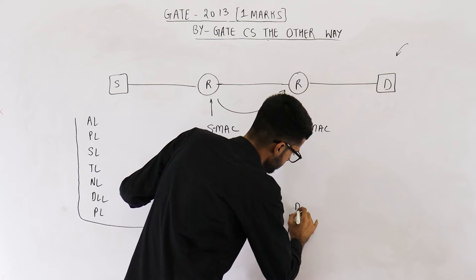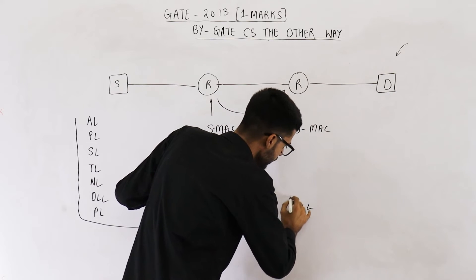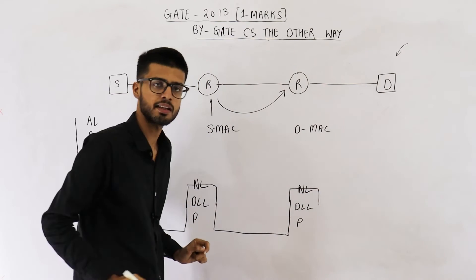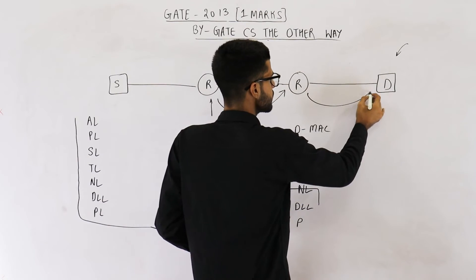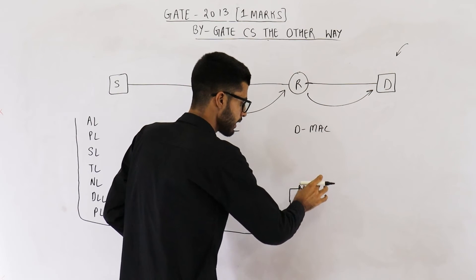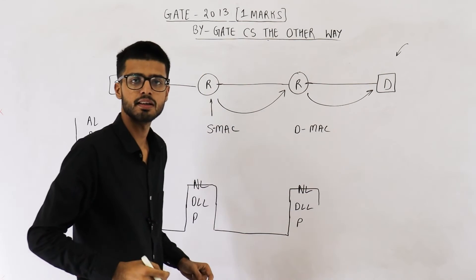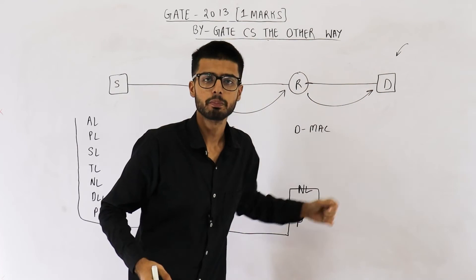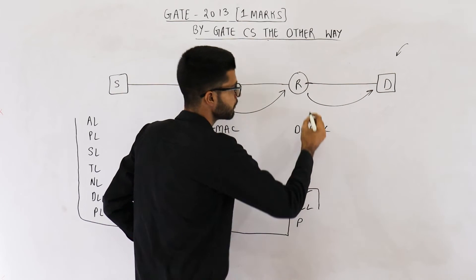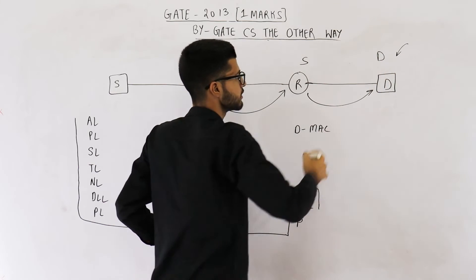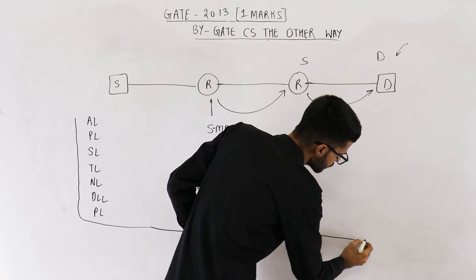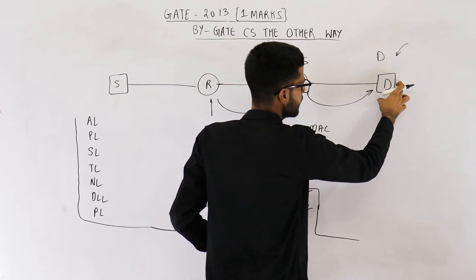Again, data link layer gets the frame. Network layer removes its packet from the DLL frame and analyzes it. After analysis, network layer realizes the next hop must be the destination machine D, so it forwards the packet on that interface. Network layer gives the packet back to data link layer to perform this hop. Data link layer again does framing — a frame is prepared with the appropriate source and destination MAC addresses. That frame is given to physical layer and travels through the channel to reach the destination.